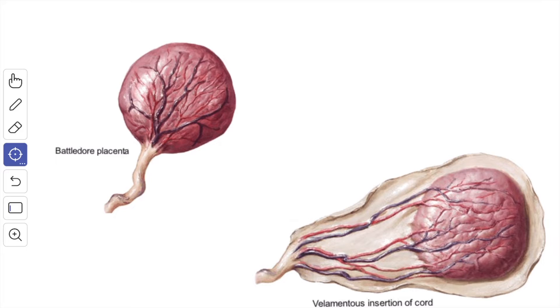Next, we'll see the classification of the placenta. According to the attachment of the umbilical cord, the placenta are classified as battledore placenta. When the umbilical cord is attached close to the margin of the placenta, it is called as battledore placenta.